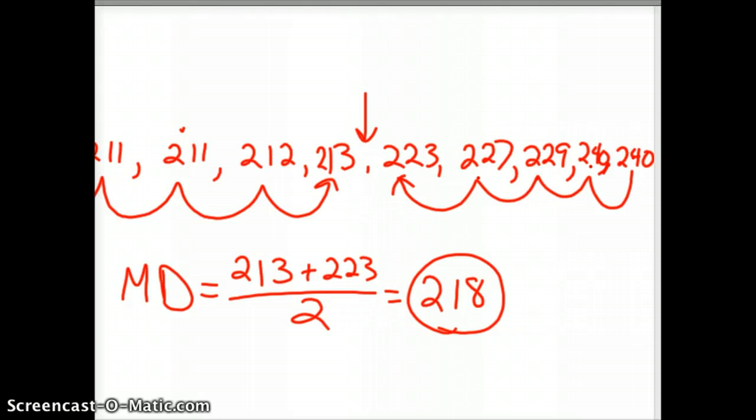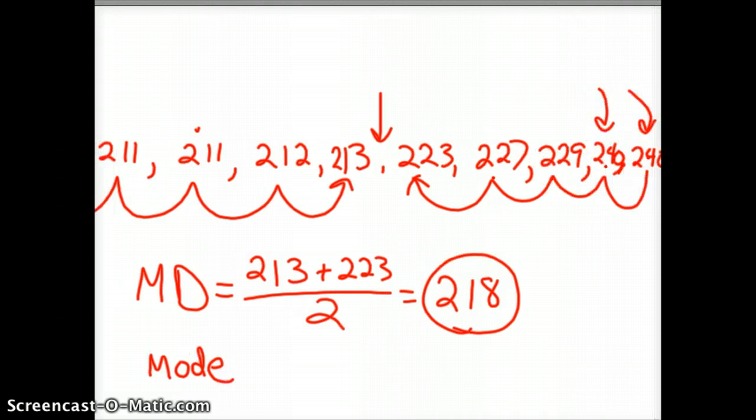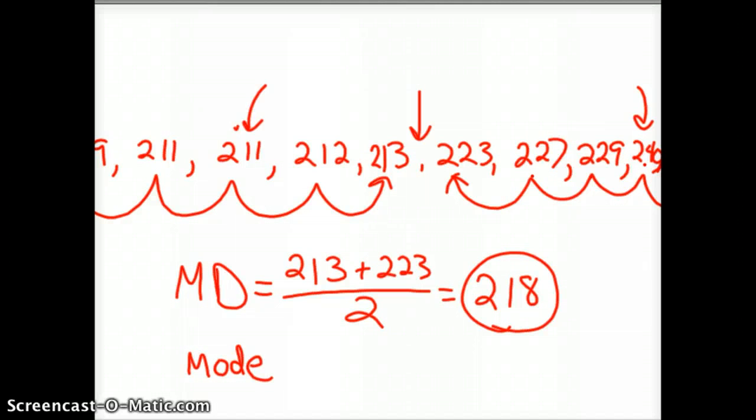Mode's kind of interesting here, because I noticed, just staring up here at the screen, I've got two 240s. And if you go back here, we've got two 211s. Everything else in that whole array is listed one time. So our mode, this is a bimodal system here. We've got 211 and 240 for our modes.